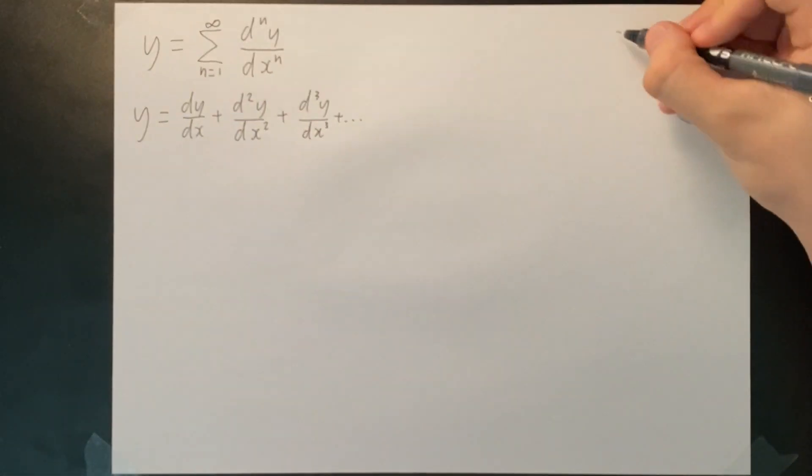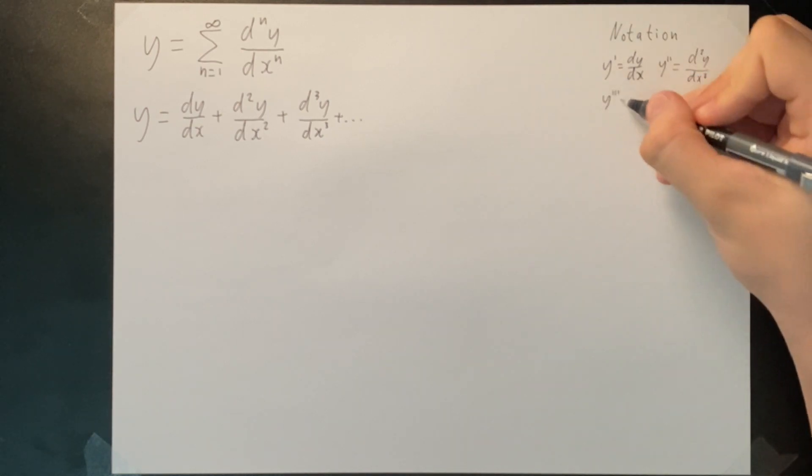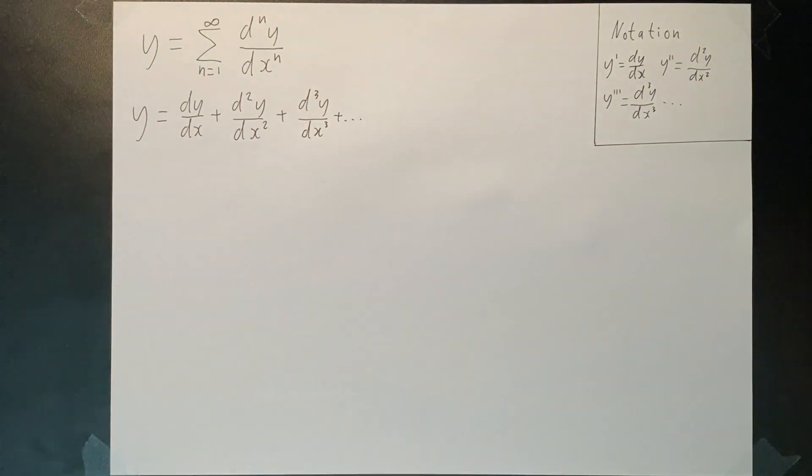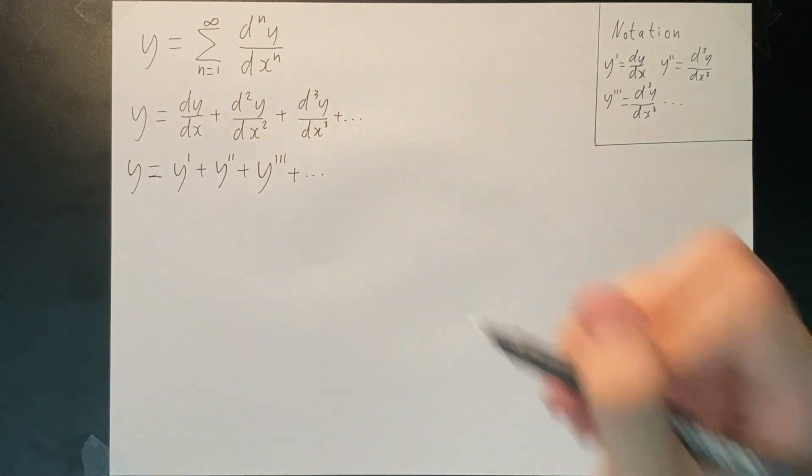On the right, we will change to prime notation to condense our dy over dx's. We can then rewrite the equation as follows. Each line in the superscript above y represents the derivative order.